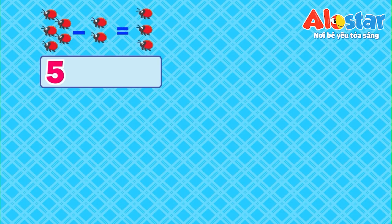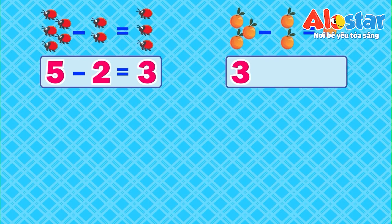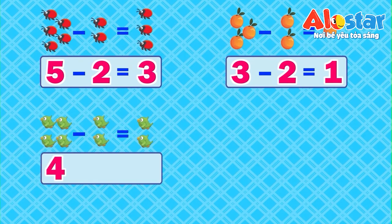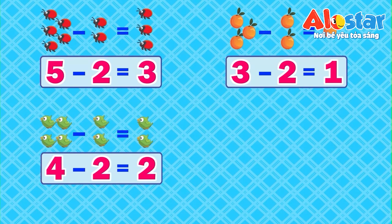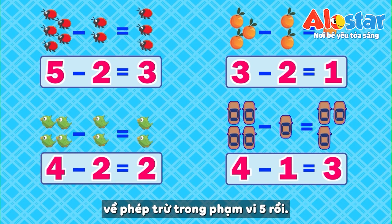5 minus 2 equals 3. 3 minus 2 equals 1. 4 minus 2 equals 2. 4 minus 1 equals 3. So we've just learned about subtraction up to 5. Goodbye!